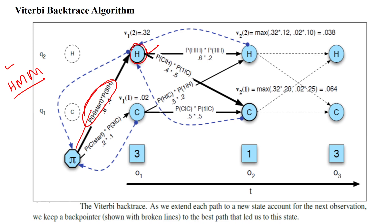Each node has its own status value and two different paths. Over different inputs, it will move to any path and take a transition towards that path. Each node has its own status and moves towards the next state based upon the input selection. This is used to model the HMM for identifying the maximum likelihood state sequence. Thanks for watching.